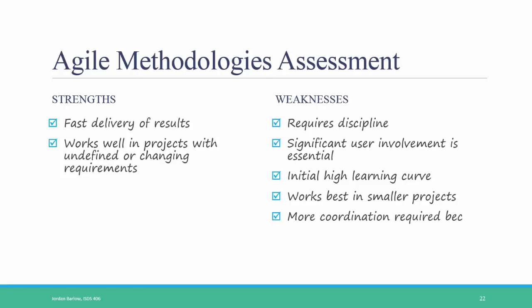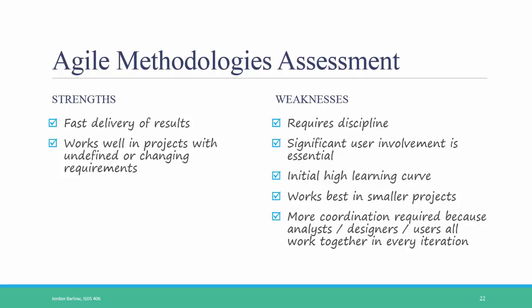More coordination is required because the analysts, designers, and users all have to come together in every iteration. In some types of agile methodology, there is a team put together of analysts, designers, and users, and they meet every two to four weeks. So users are heavily involved, which can be a pro, but it can also be a con because of the increased coordination.